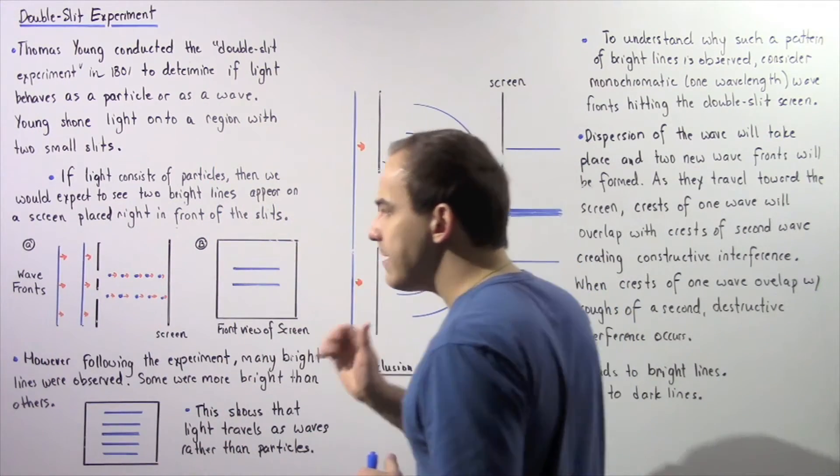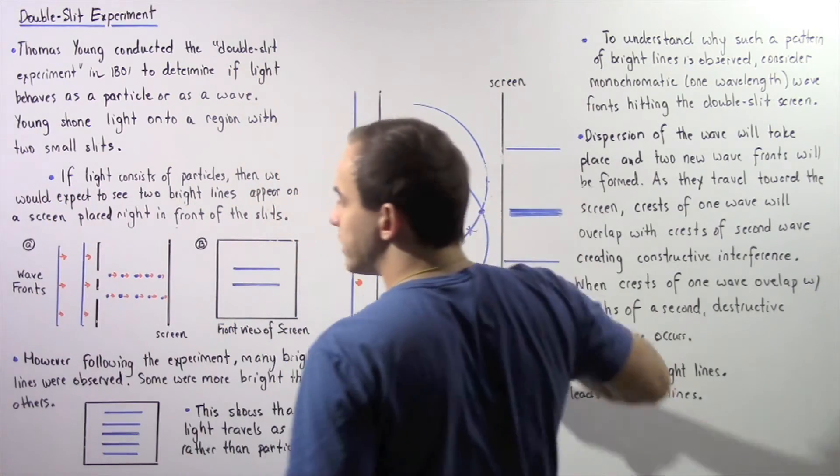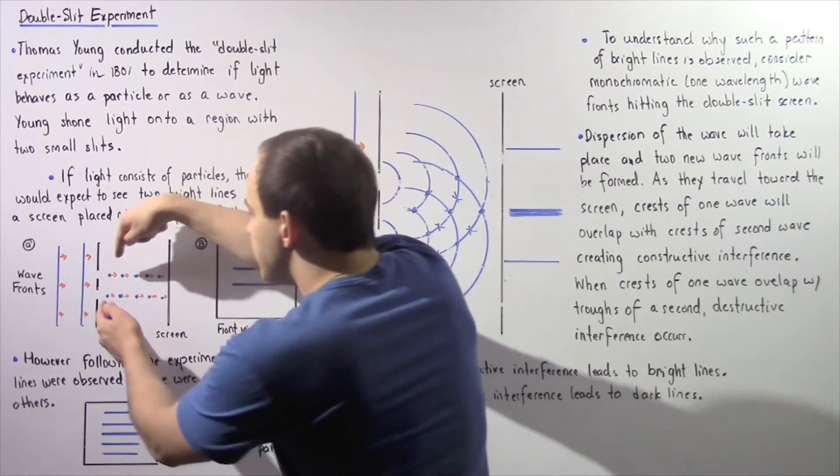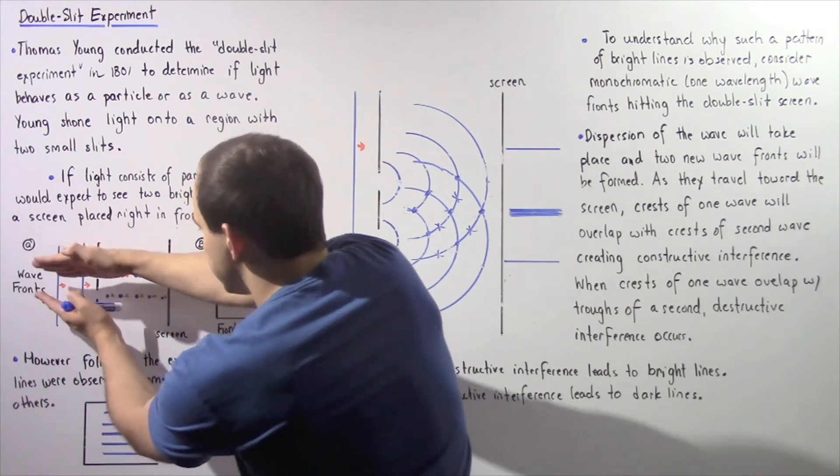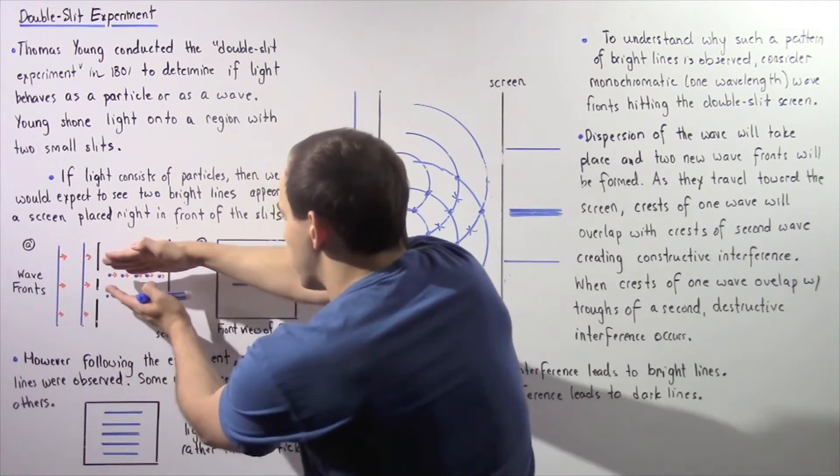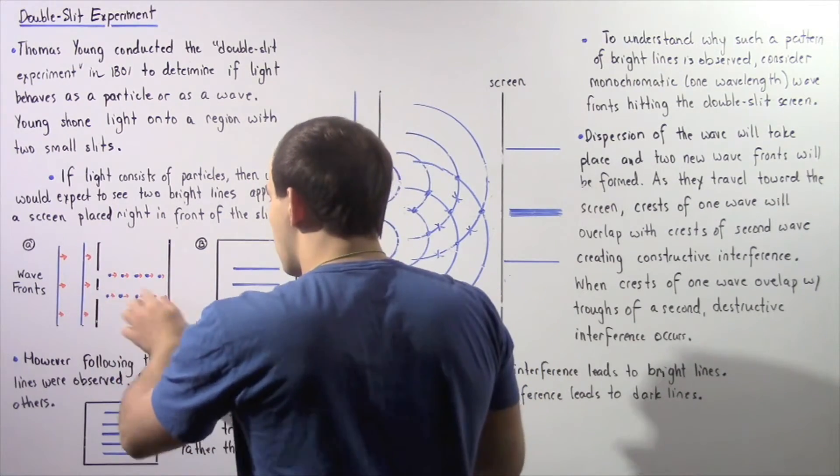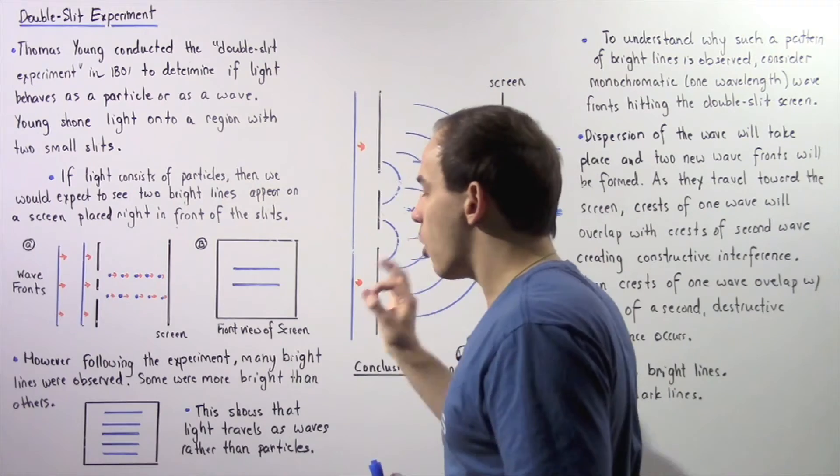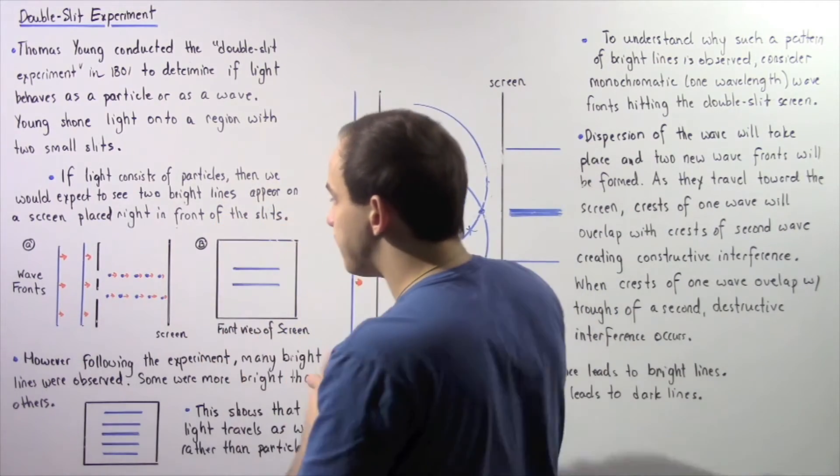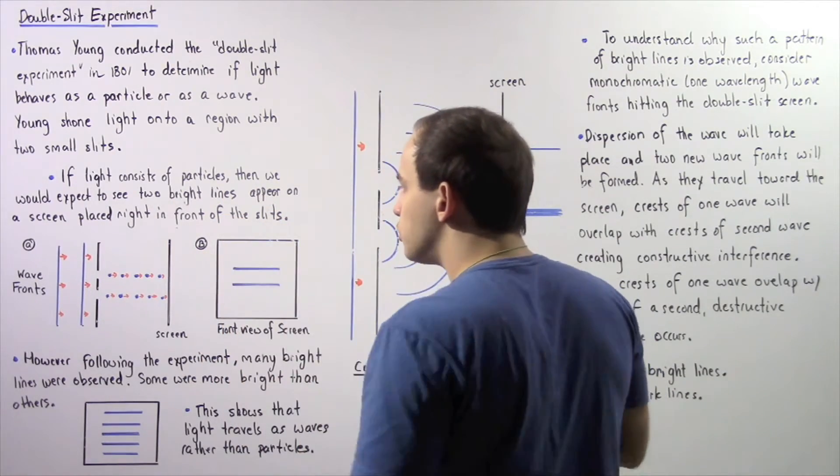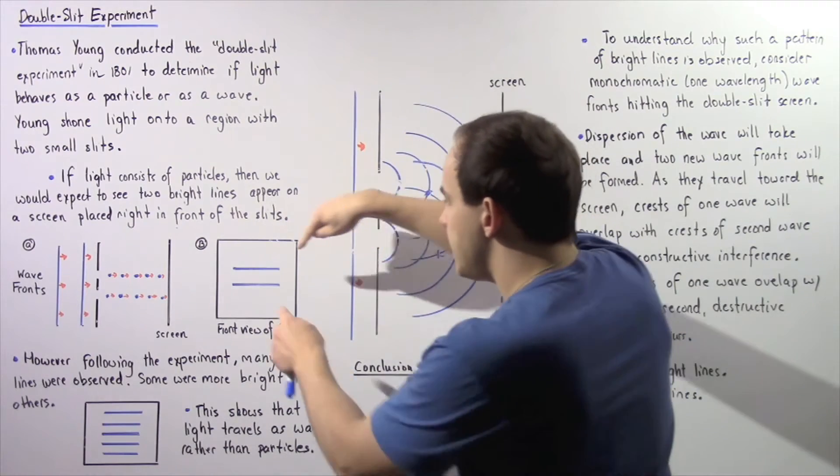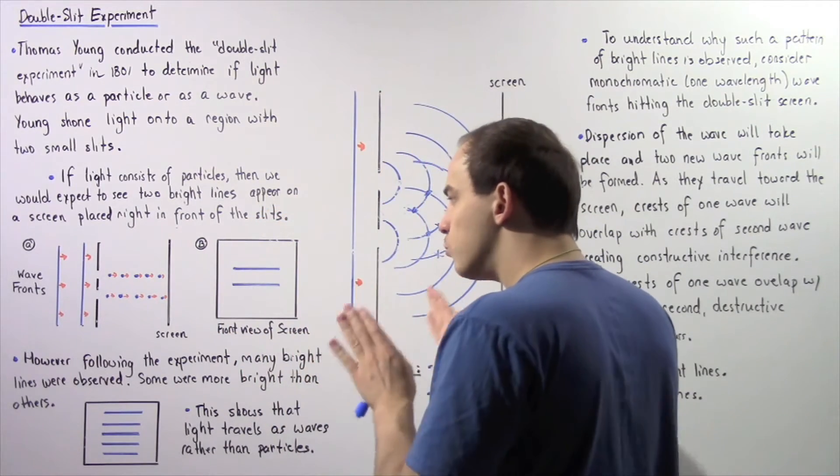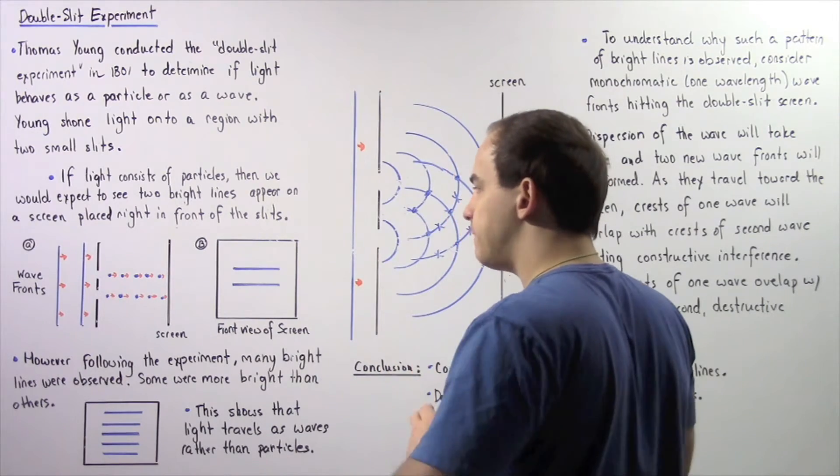When the wave fronts hit the double slit screen, if the light consists of particles, then these particles would essentially continue along the straight pathway as shown in diagram A. When these particles reach the screen, they produce as shown in diagram B the following two bright lines, and only two bright lines will be formed.